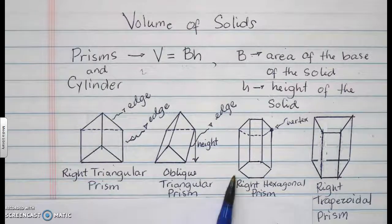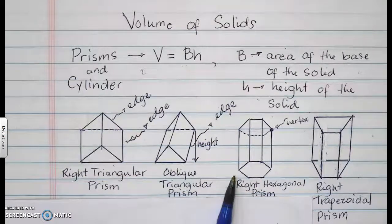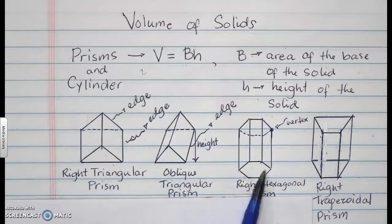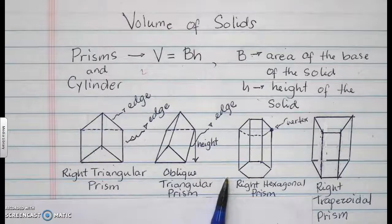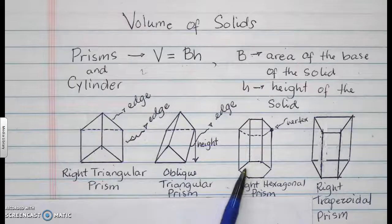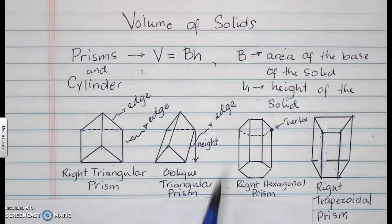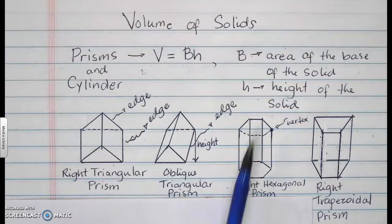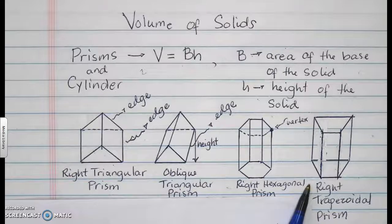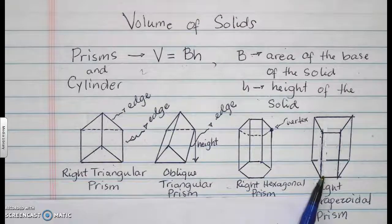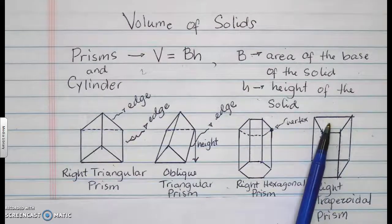This is called a right hexagonal prism because the edges are forming perpendicular to the base, perpendicular angles to the base, forming 90 degrees angle, as well as the shape of the base is a hexagon. Or the bases are hexagons. There are two bases here, the top and the bottom. In this particular case, it's called a right trapezoidal prism because the edges are perpendicular to the trapezoidal base, and there are two bases, the one on top and the one below.